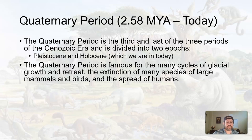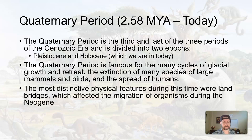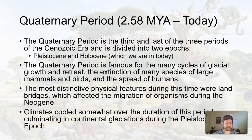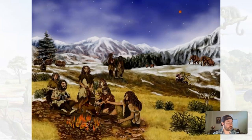The Quaternary is famous for glacial growth and retreat, but we also get the extinction of many large species of mammals and birds, making things look more like they are today. The spread of humans also occurred. The Bering Sea land bridge — Beringia — really helped and affected the migration of organisms, including humans.